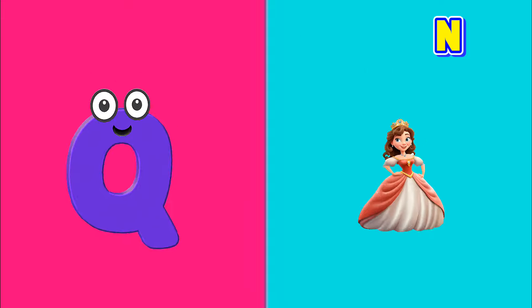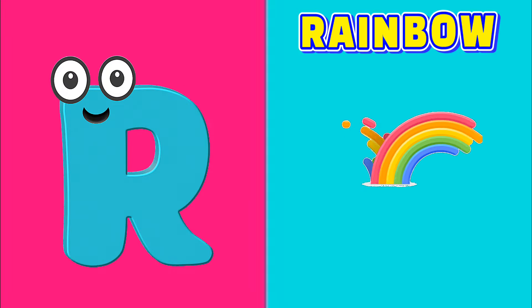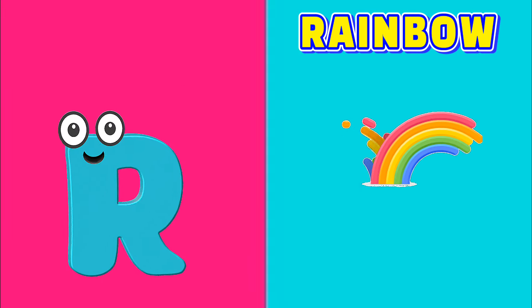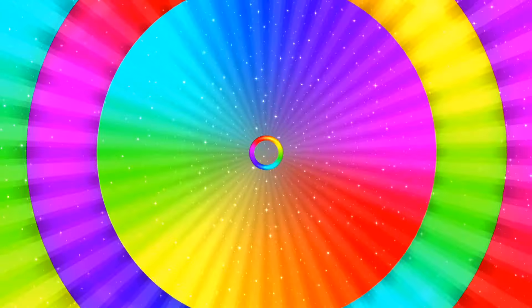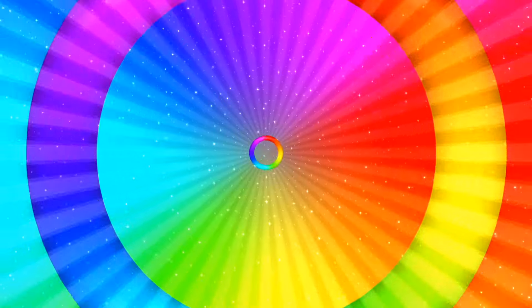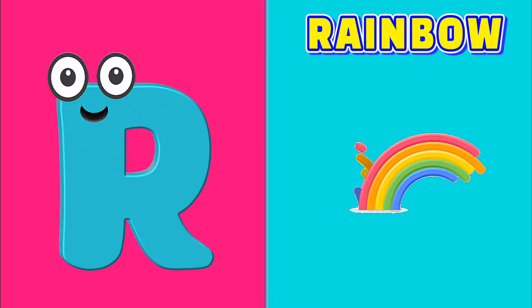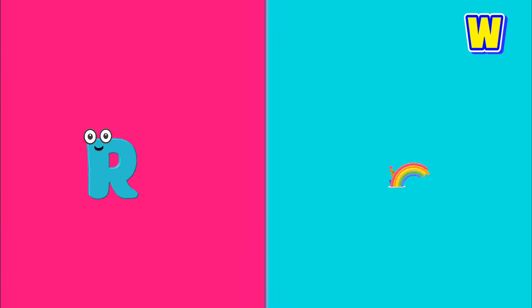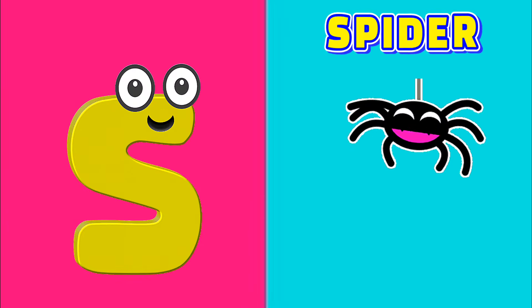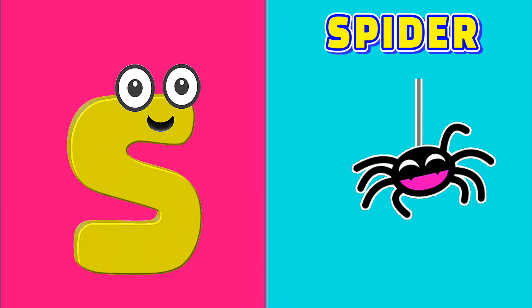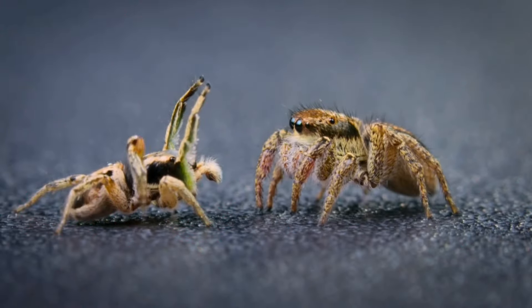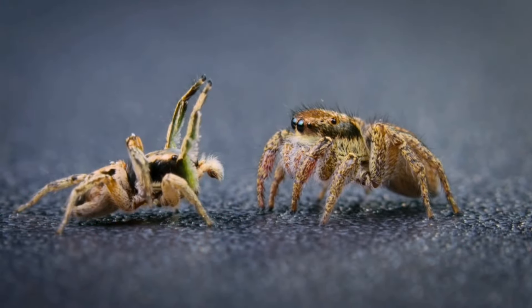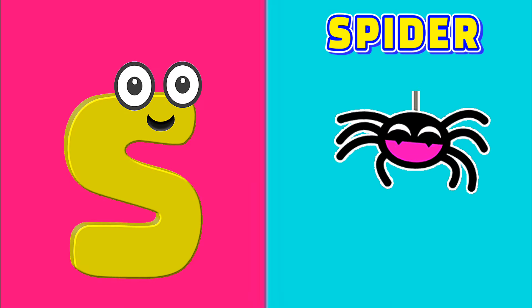R is for Rainbow. R, Rainbow, R, Rainbow, R. S is for Spider. S, Spider, S, Spider, S.